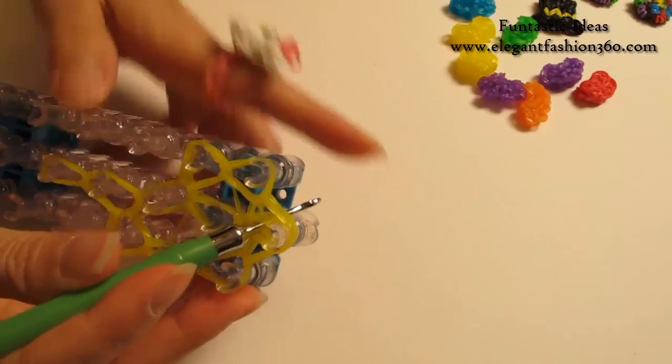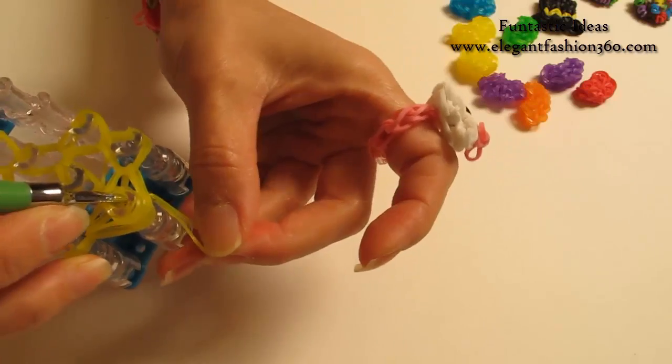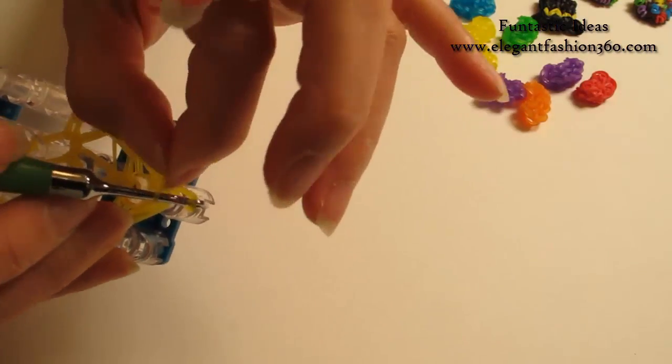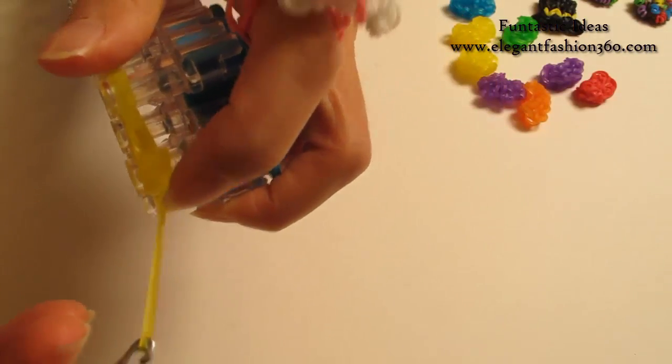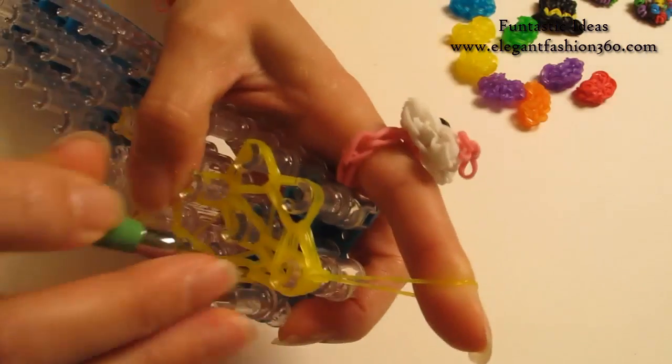Now when you're done, put your hook through here. Take one single band, grab it through, put both ends on here, and take one end through the other. Pull it, so you will tie a knot here. Keep this part on your finger while you're pulling it, so it won't come undone.